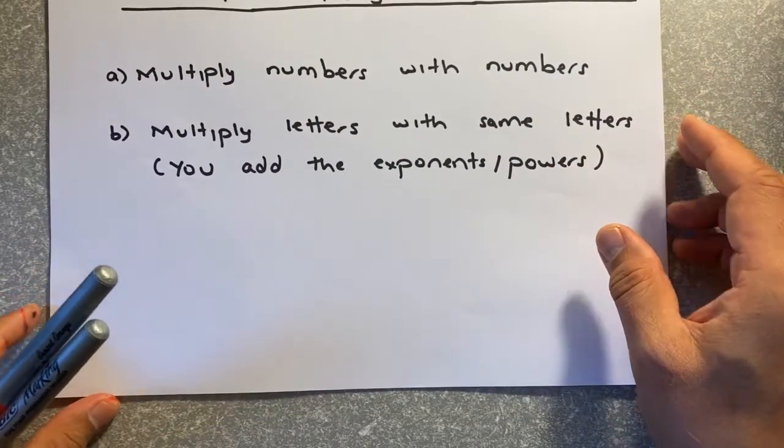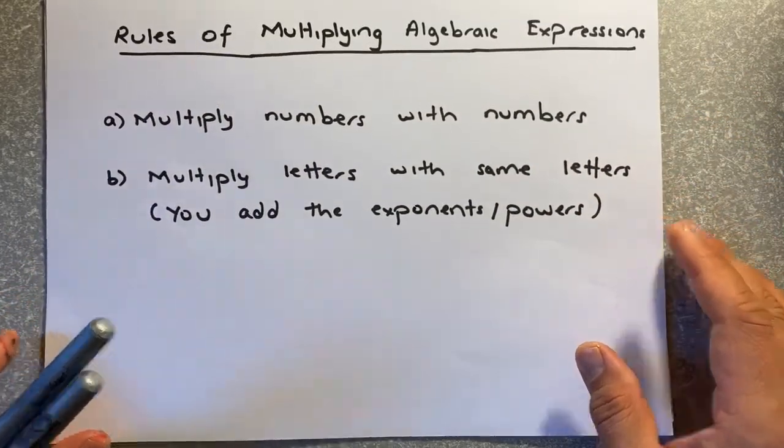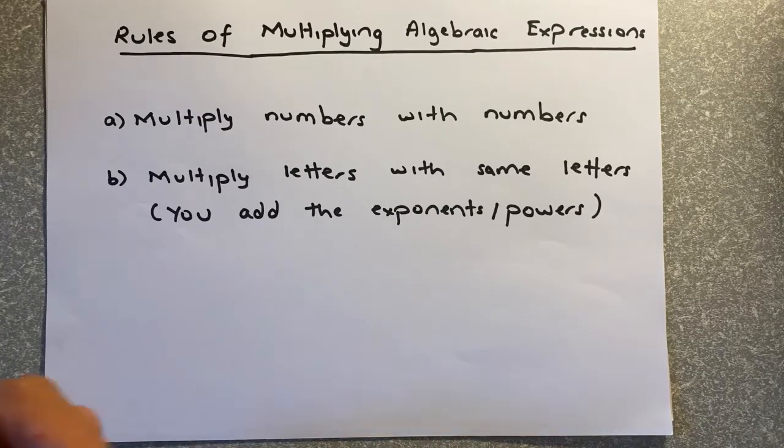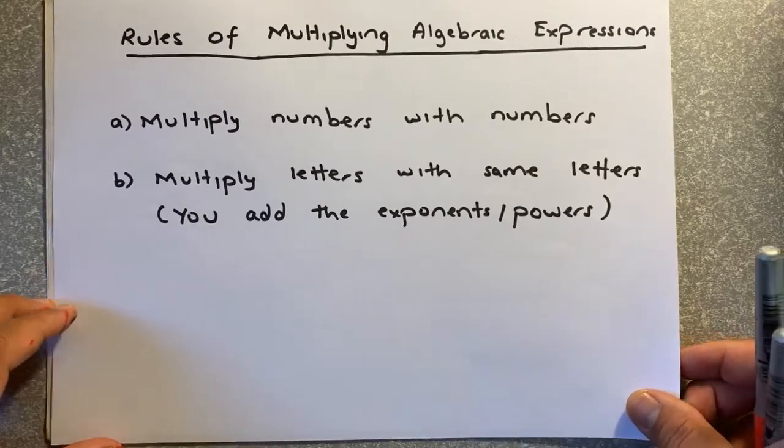The rules of multiplication of algebraic expression is the following. You need to multiply numbers with numbers, and you multiply letters with the same letters. When you do that, you just need to add the powers or the exponents.